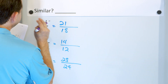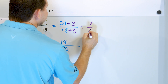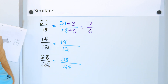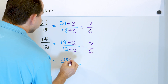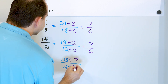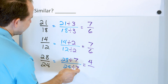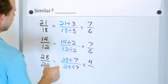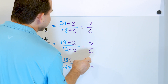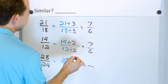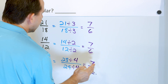I think I can simplify all three. For 21/18, divide by 3: 21 divided by 3 is 7, and 18 divided by 3 is 6, giving 7/6. For 14/12, divide by 2: 14 divided by 2 is 7, and 12 divided by 2 is 6, giving 7/6. For 28/24, divide by 4: 28 divided by 4 is 7, and 24 divided by 4 is 6, giving 7/6. I accidentally tried dividing by 7 first — that was a mistake since 24 is not divisible by 7 — but dividing by 4 is the right move.